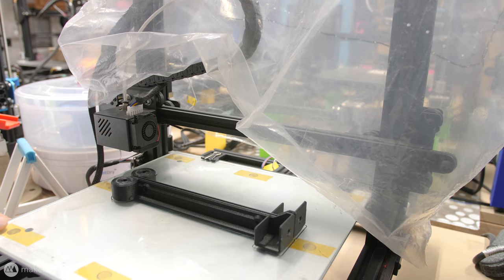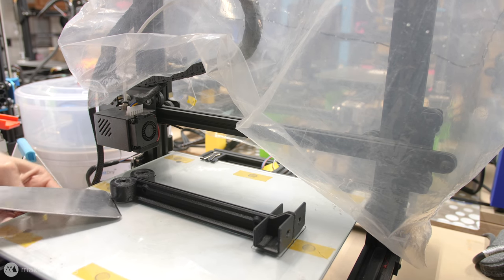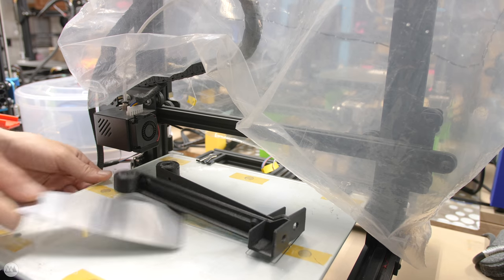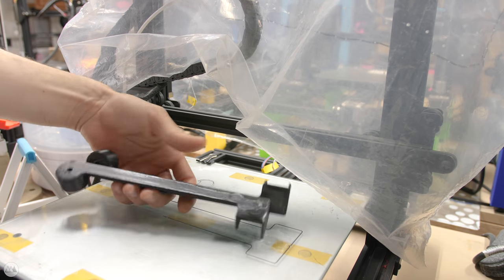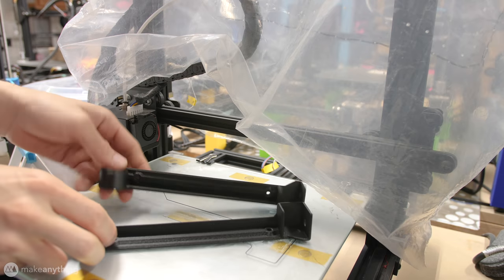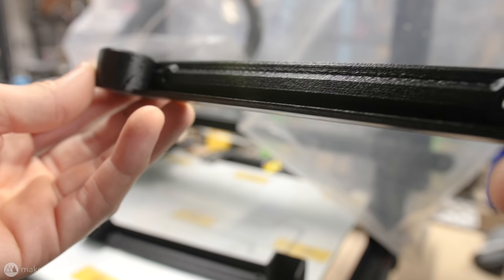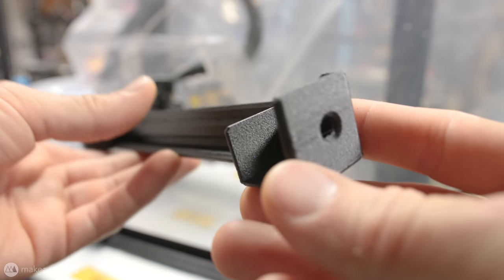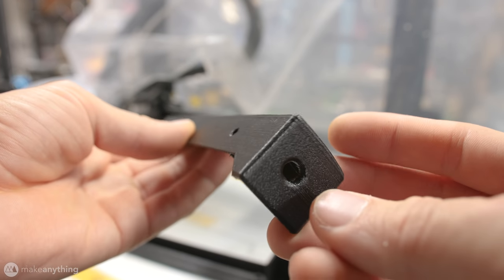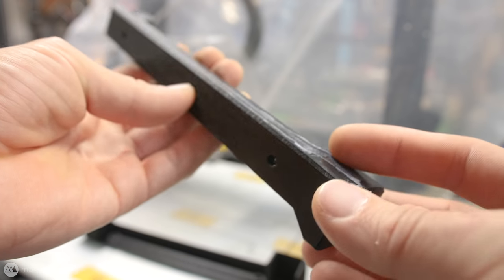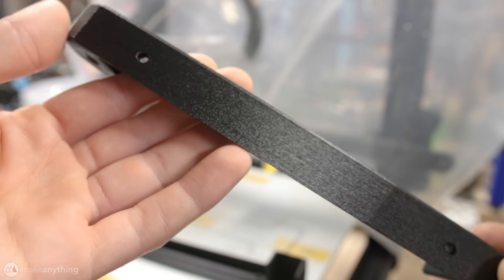Now this filament does require some special conditions. You can see I used that PrintDry filament dryer. I also put a bag over my printer to create some kind of a heated chamber to prevent warping of these long parts. And I also used that fancy Olsson Ruby nozzle in order to deal with this really abrasive filament. But with all those things combined I was able to get this really clean print.